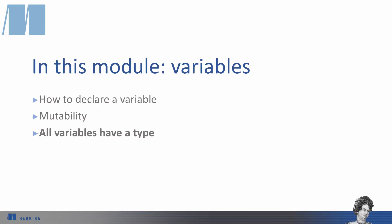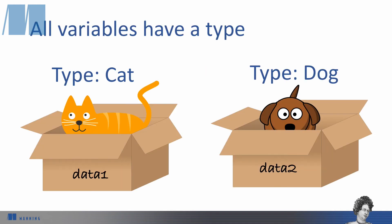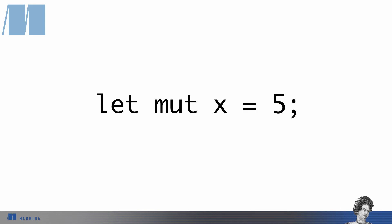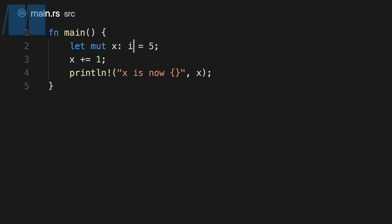The last big difference between variables in Rust and variables in some other languages is that every variable in Rust has a type. These two variables have different types based on the values they contain. If we want to annotate the type of a variable, we can, by putting a colon after the name and then the type after the equal sign. In our previous examples, we didn't have to say that x was an i32 though — Rust was able to figure that out based on the value 5 that we assigned to it. Most idiomatic Rust you'll see doesn't annotate types except for situations in which Rust can't figure out the type you want without an annotation.